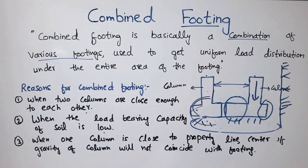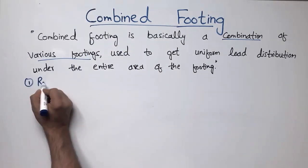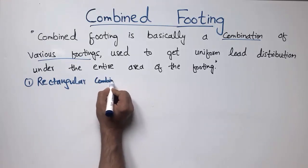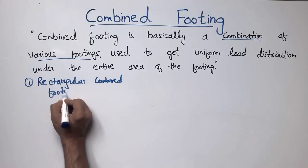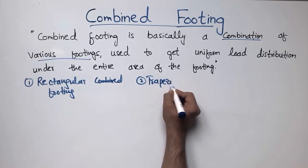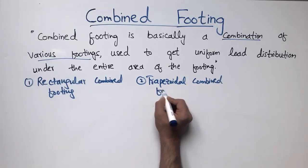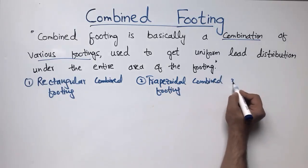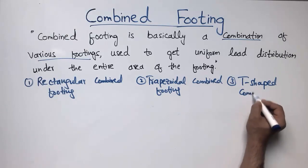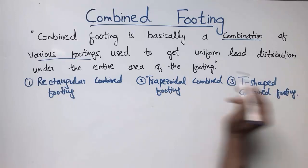There are three main subtypes of the combined footing. The first one is the rectangular combined footing. The second one is the trapezoidal combined footing. And the last one is the T-shaped combined footing. So depending upon the shape, we have three different subtypes of combined footing.